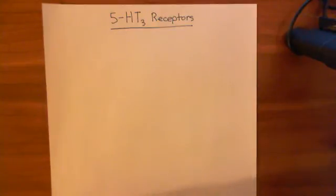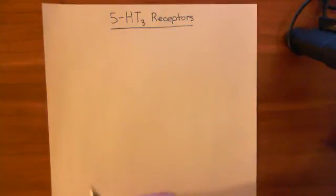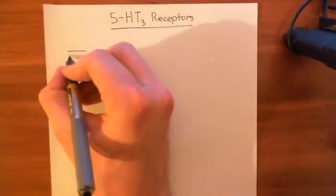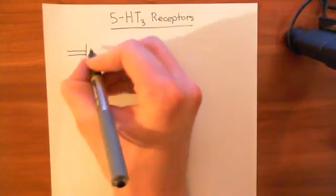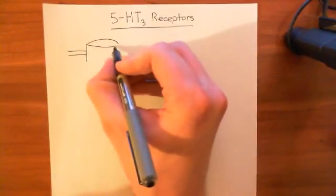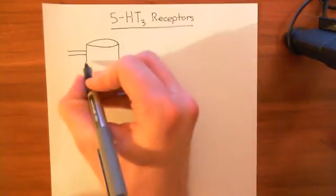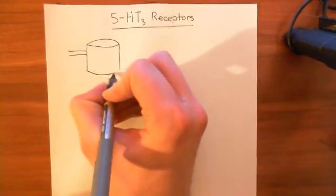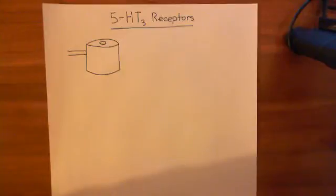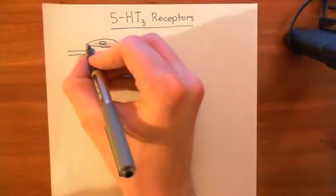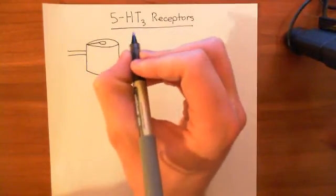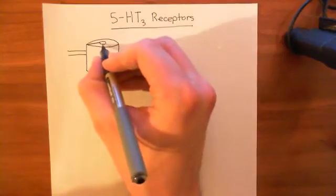Let's start by discussing the structure of the 5-HT3 receptor. So we have the phospholipid bilayer, and within it we have our 5-HT3 receptor sitting here. It's a cis-loop ligand-gated ion channel, which means it has a pore that allows ions to move through it. When the ligand arrives and binds to the receptor, that causes the pore to open. Now, all cis-loop ligand-gated ion channels have five subunits making them up.